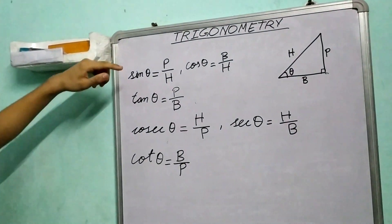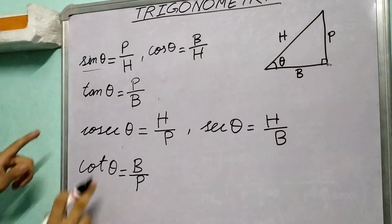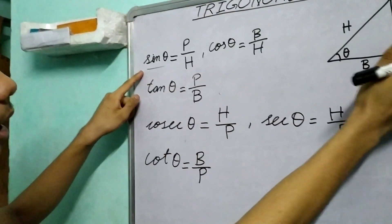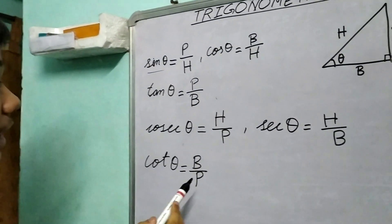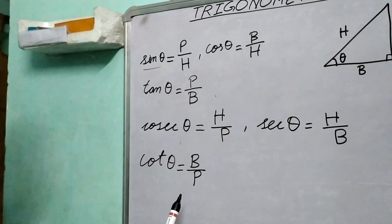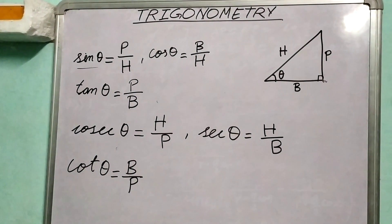Now see, let us consider sine first. So sine is perpendicular upon hypotenuse, P over H. And what is cosec? Cosec is hypotenuse over perpendicular, right?